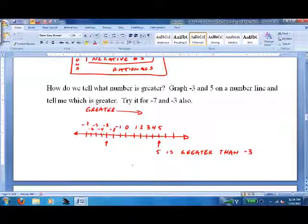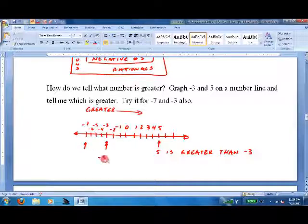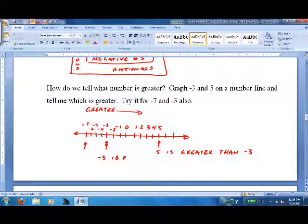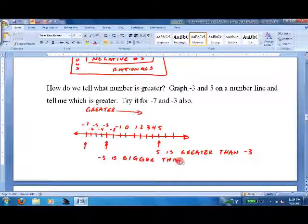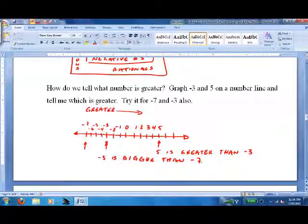How about negative 7 and negative 3? Because that one can be very confusing. We'll go negative 7 and negative 3. Therefore, negative 3 is bigger than negative 7. Again, once you practice, you get pretty good at it. But, it's handy to have a number line the first few times you do it.